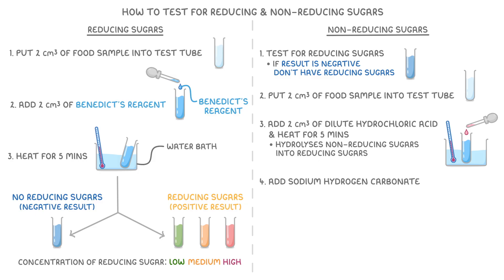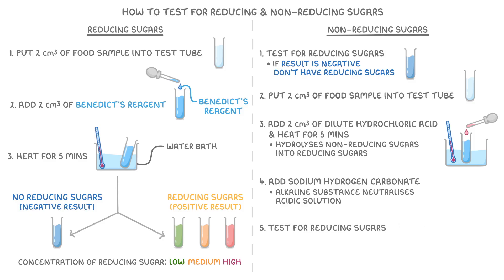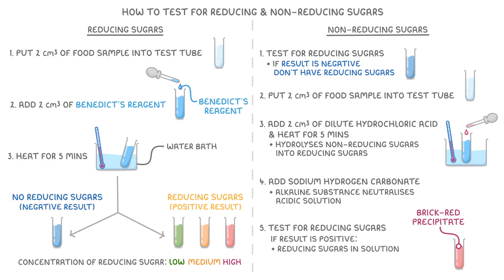Next, we add sodium hydrogen carbonate, which is an alkaline substance that neutralises the acidic solution. Then finally, we test for reducing sugars again, and this time if the result is positive and we see a brick red precipitate, it means that there are now reducing sugars in the solution, which tells us there were non-reducing sugars in that original food sample.